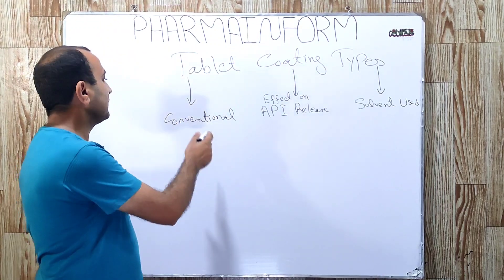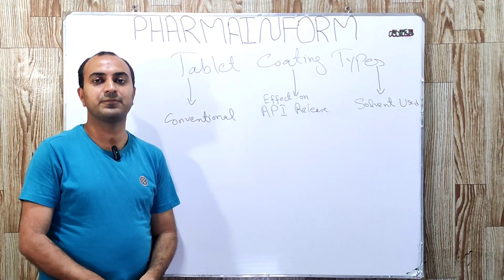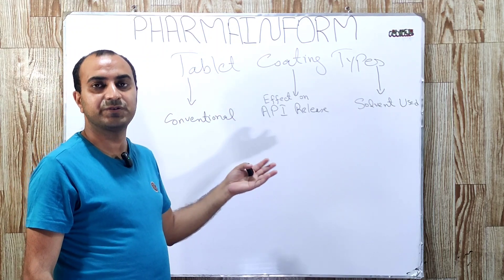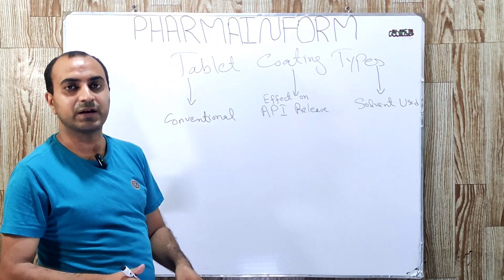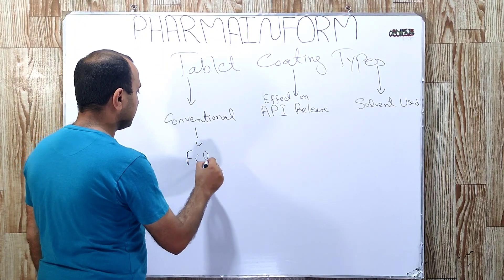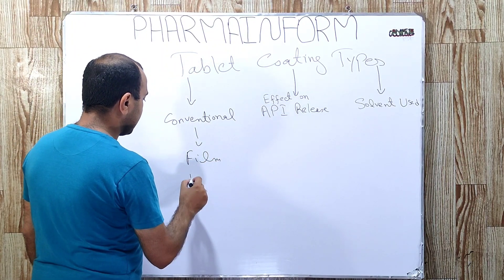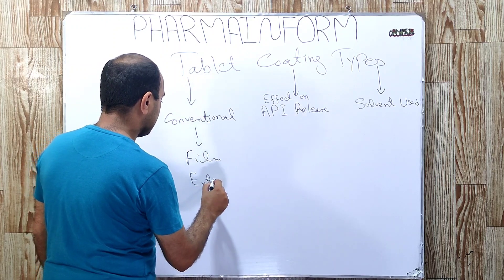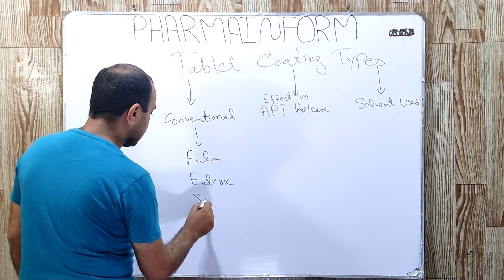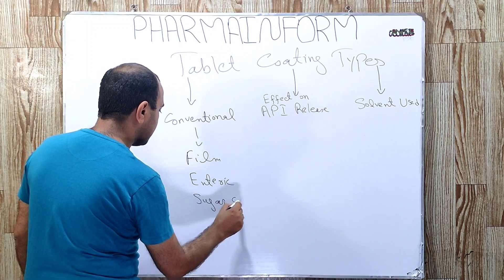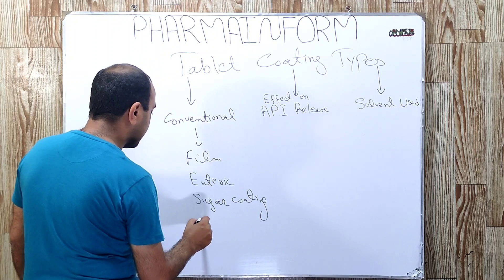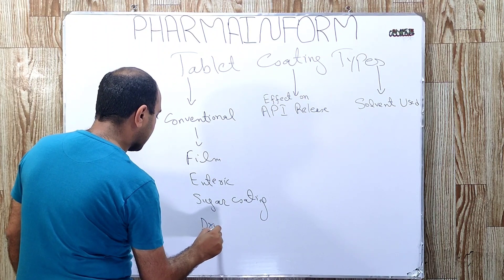The first is the conventional types of tablet coating. These are: film coating, enteric coating, sugar coating, and the fourth one is drug coating.